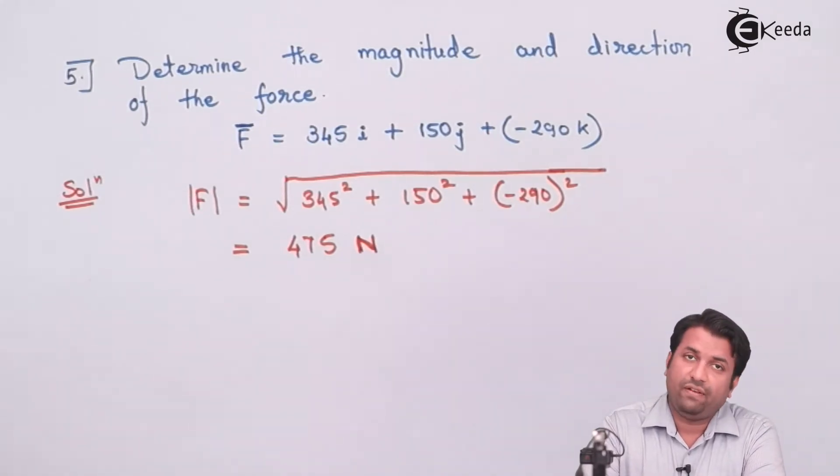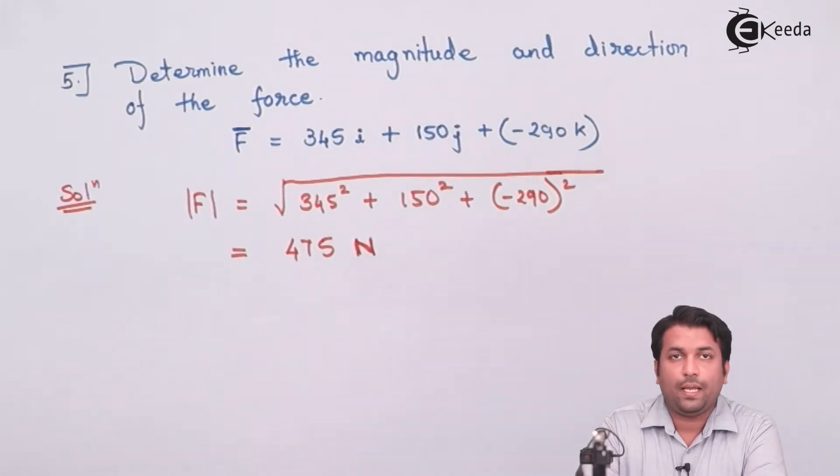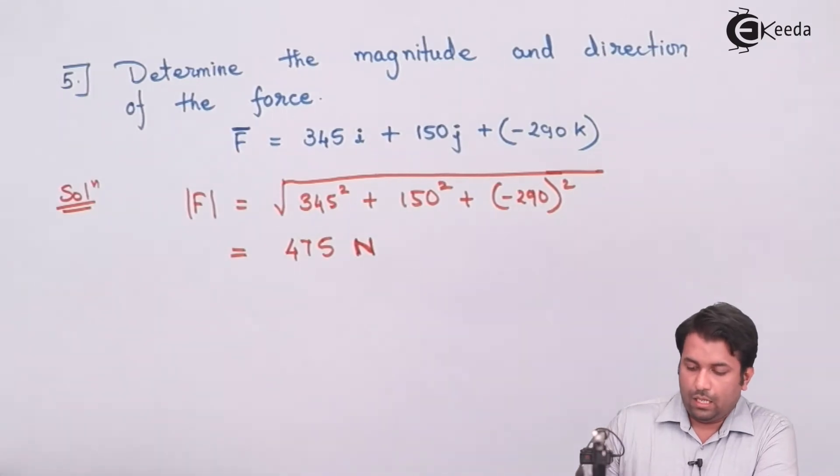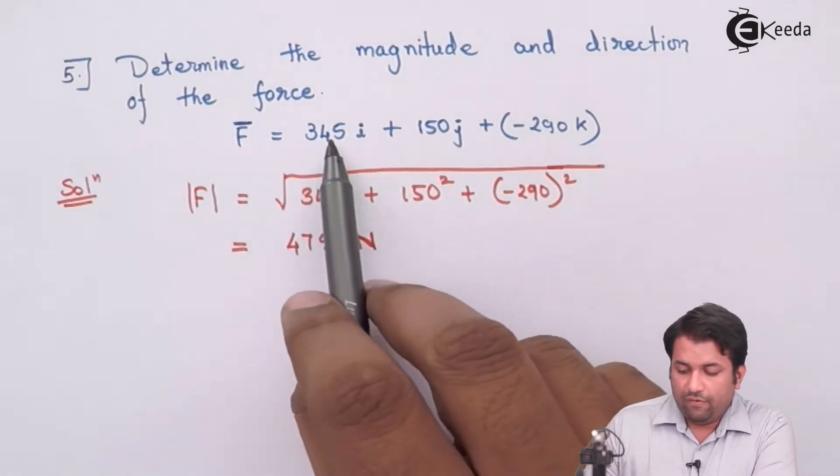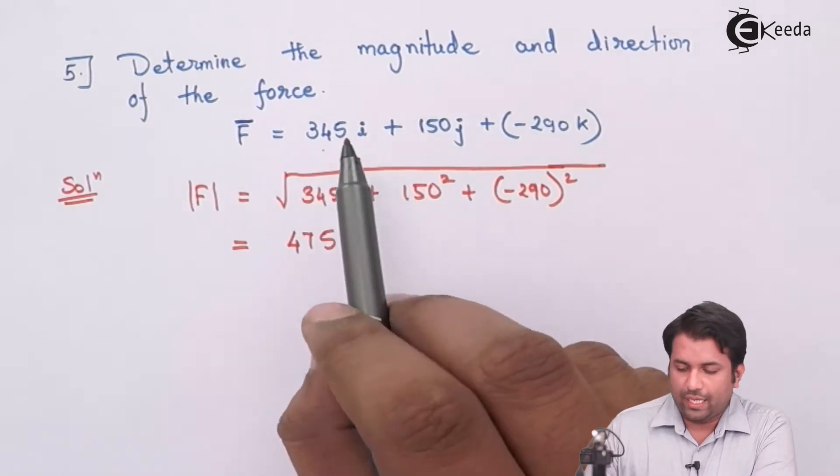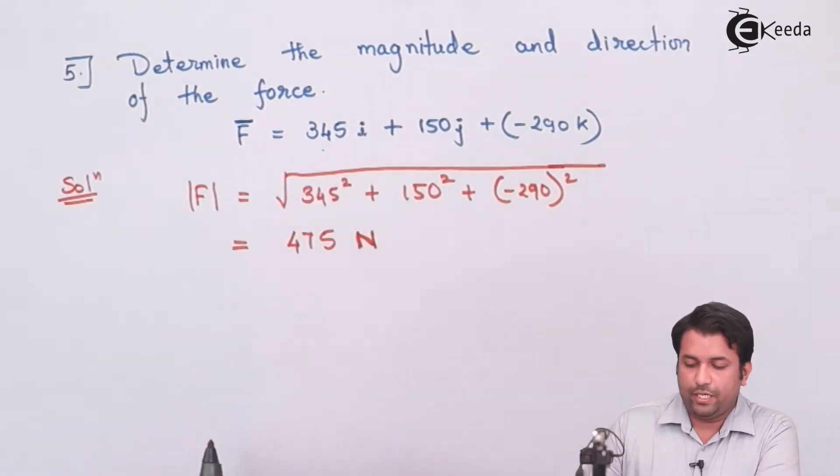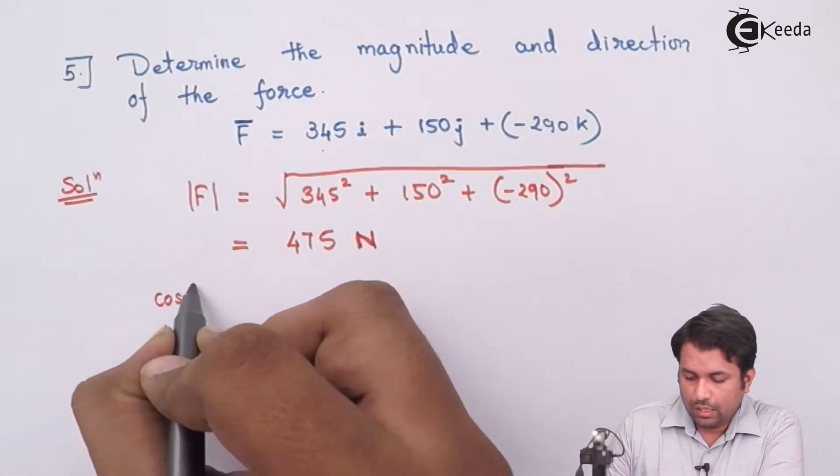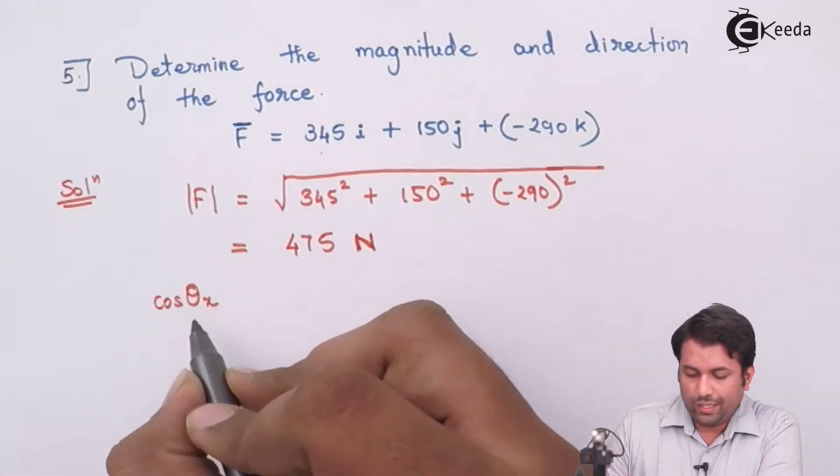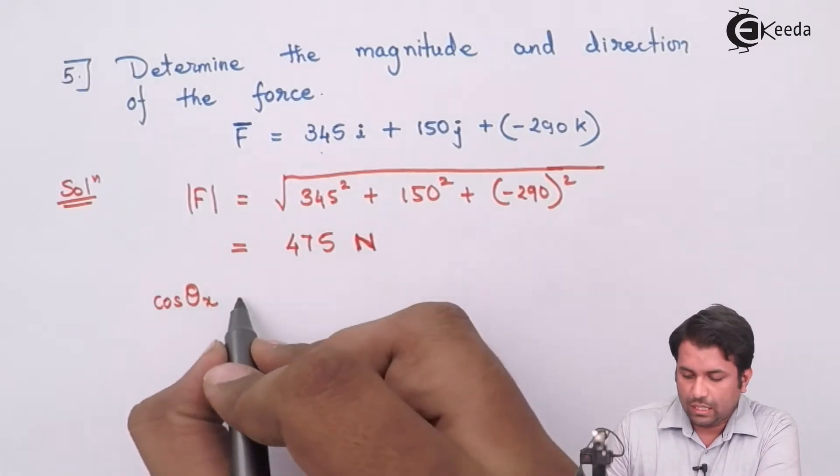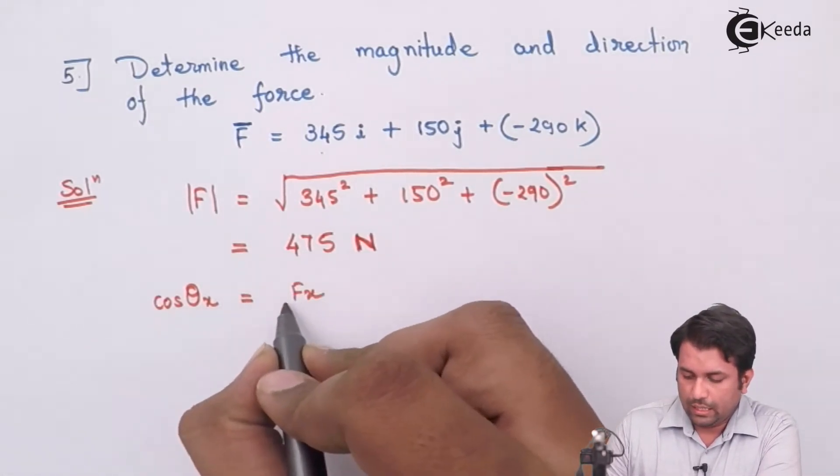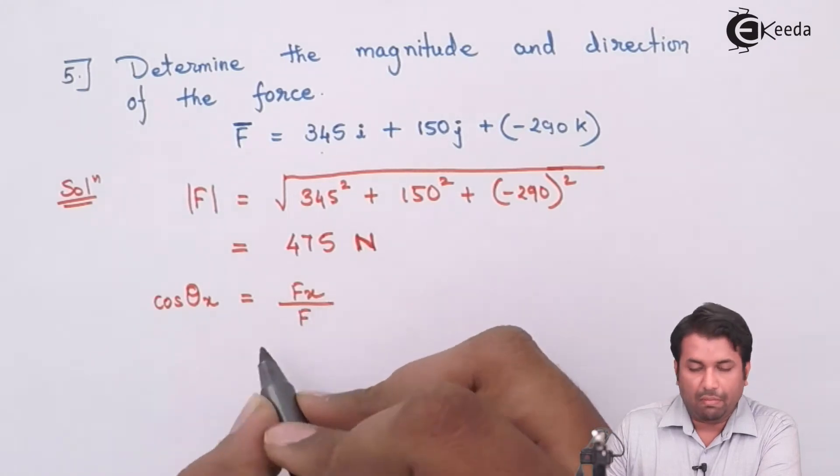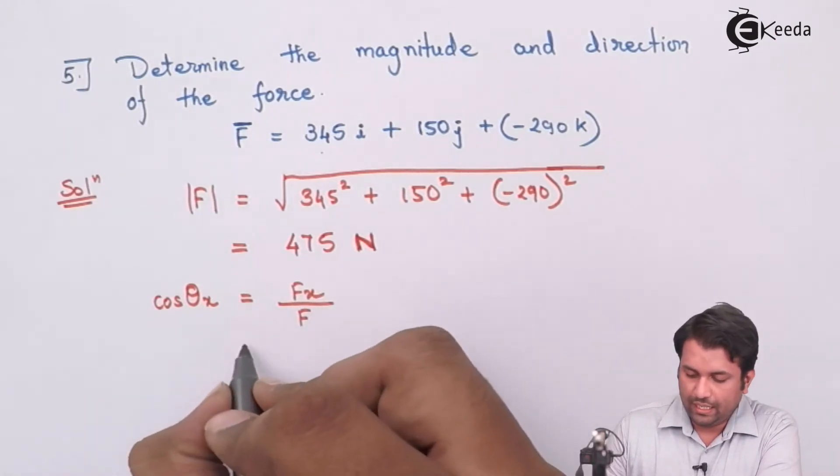Now, using this magnitude, we need to find out the angle or the direction that it is making with the respective axis. We know force along X, or the component along X, is 345 Newtons. So, if I need to find out the angle with respect to X, I know the component and I know the magnitude.